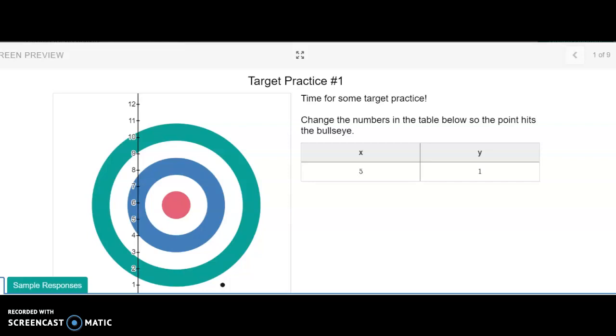All right, so once you've logged in using your class decimals code, you will see that this is the first target practice. When we look at this, we see that the x value is at five.